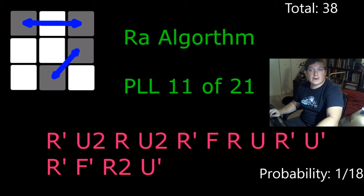The RA algorithm, same thing. If you rotate the cube and do this algorithm, there's four separate ways this can happen. So 38 total cases.